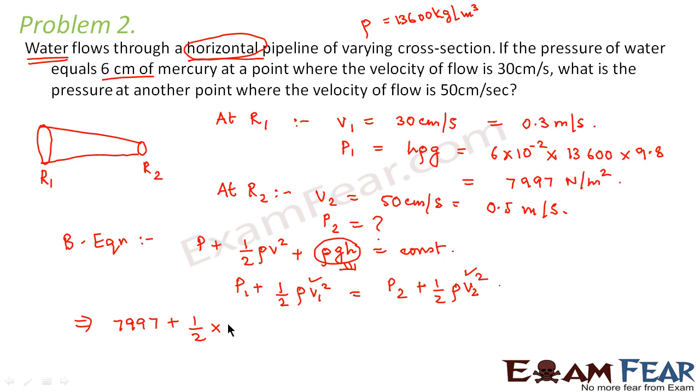That is water. So density of water is 1000 kg per meter cube. So rho will be 1000. And what is V1?